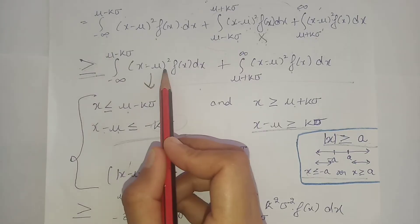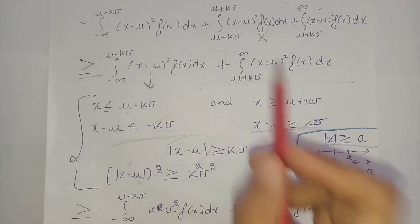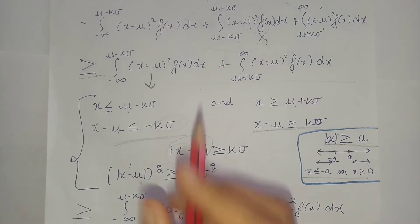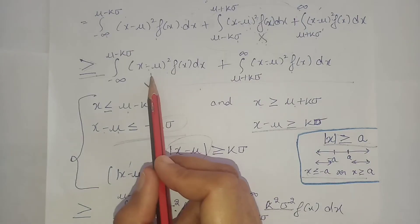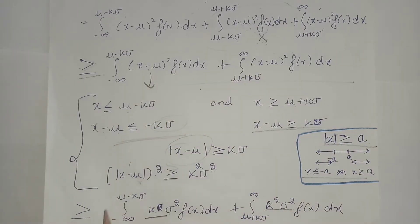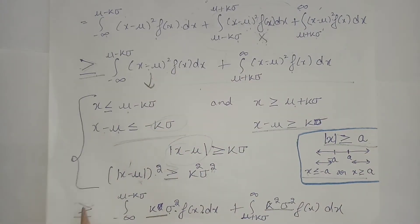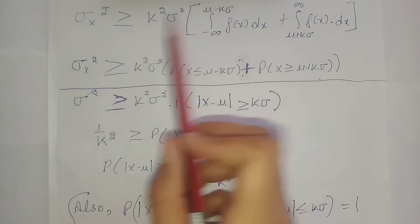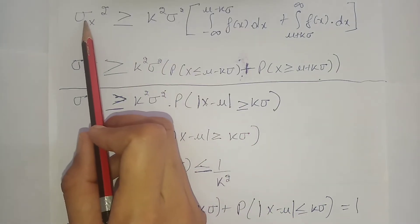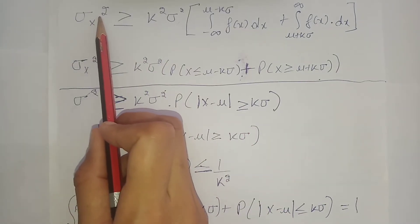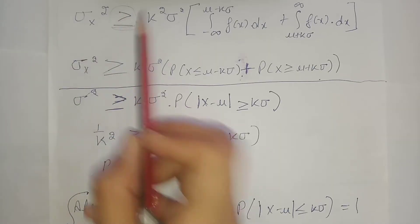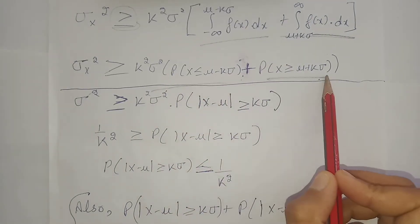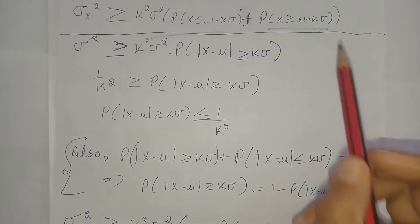Substituting k squared sigma squared into the integral, we know k squared sigma squared is always less than or equal to x minus mu squared in the integration region. Taking k squared sigma squared outside the integral, the remaining integral is expressible in terms of probability. Sigma squared from the variance definition appears on the left-hand side, and we can now write both integrals in terms of probability.